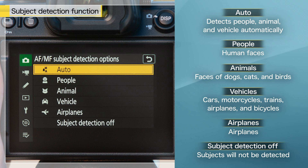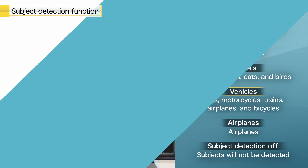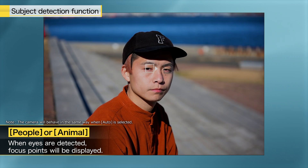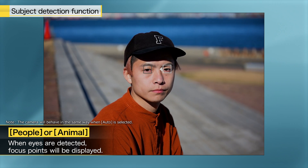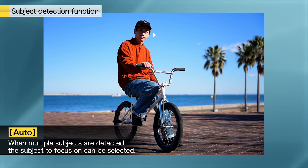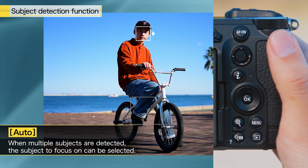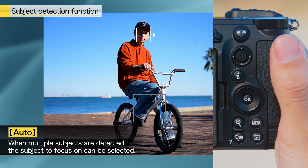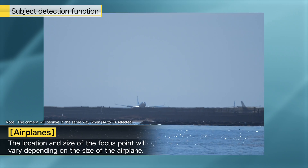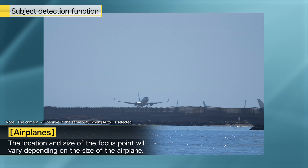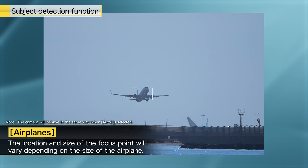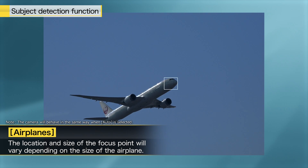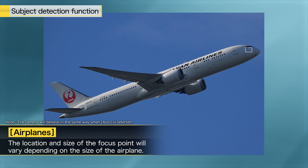Nine types of subjects can be detected. When People or Animal is selected, detected eyes are identified by borders indicating focus points. When multiple subjects are detected, use the multi-selector to position the focus point over the desired subject. If an airplane is detected when Airplanes is selected, the focus point will appear over the airplane in question. The camera will detect the body, nose, or cockpit depending on the size of the airplane.